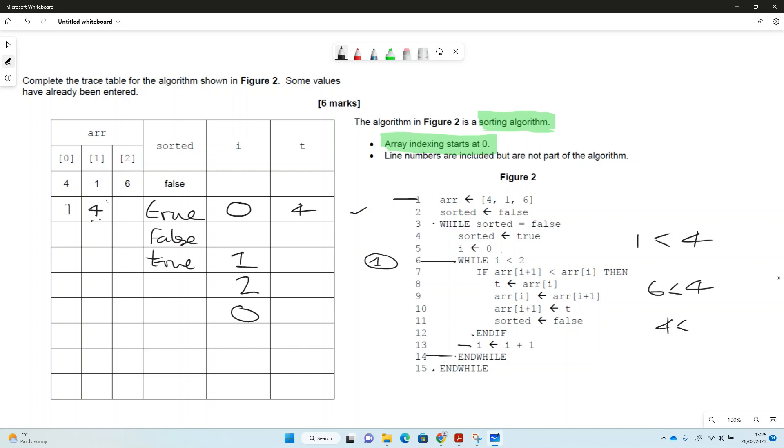is less than array[i]. Array[i] is 1, is 4 less than 1? Well it isn't less than 1, so we're not going to do any of those things, but i will increment again, so i will become 1 there.